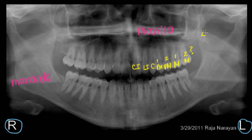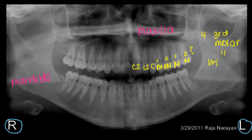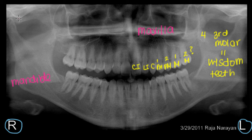All four of my third molars are gone, and the reason is because they were my wisdom teeth. Your third molars are called your wisdom teeth, and often people get these removed. In fact, 72% of people get their wisdom teeth removed.